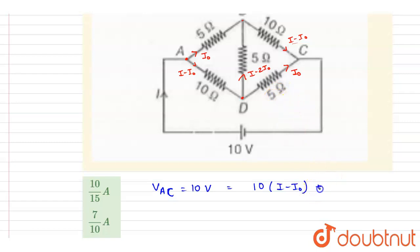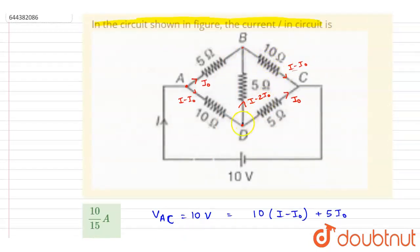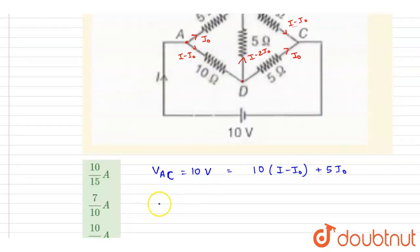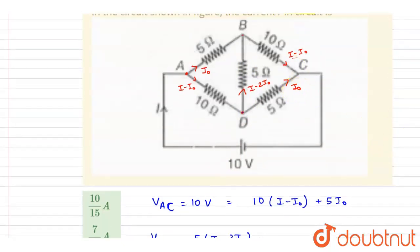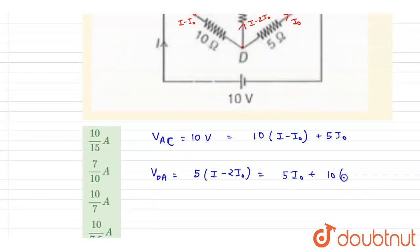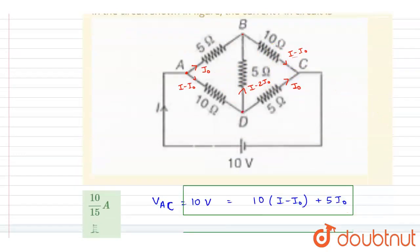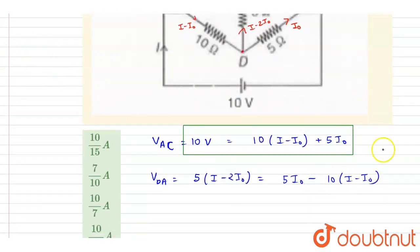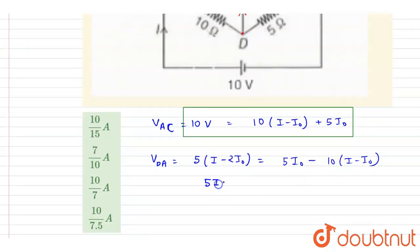The potential difference across the 5-ohm is noted. For the small triangle loop, the potential difference between D and B is considered. Moving in the direction of current, D is at the higher potential. This gives us the equation: 5i-naught plus 10(i minus i-naught), and for the 10-ohm branch the direction of current is opposite, giving a negative sign.